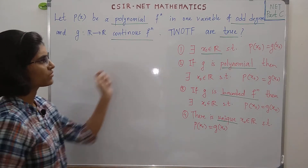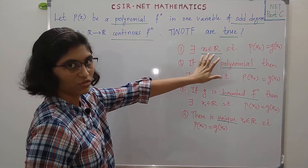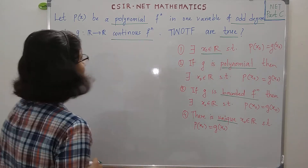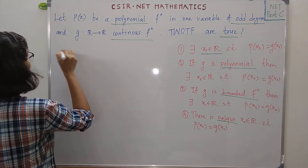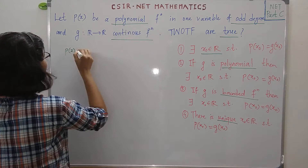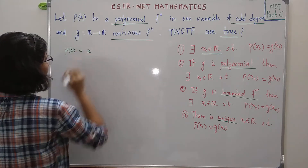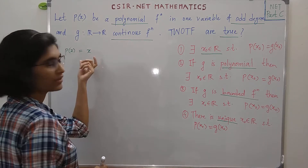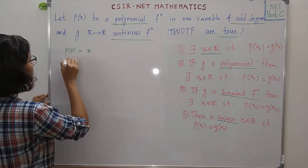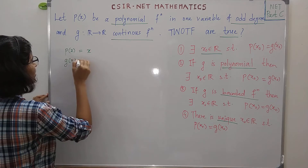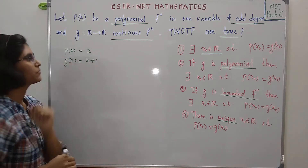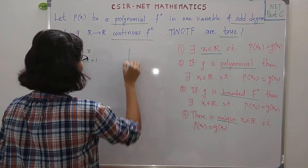The first option says P(X₀) is equal to G(X₀). This is not true because if you take P(x) to be x — a polynomial of degree 1 which is odd degree — and you take G(x) as x plus 1, it is a continuous function from R to R.